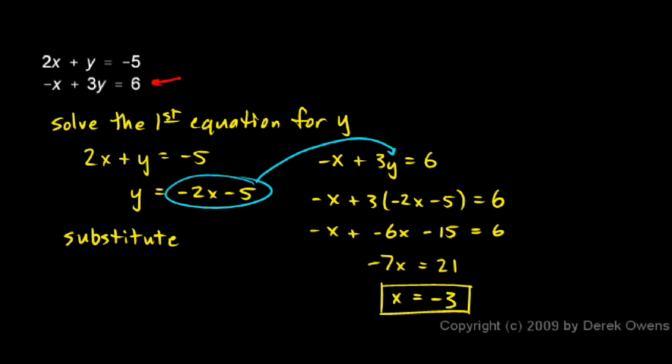And I can plug it back into this equation or to this one, or I can just look right here. Look at this line that I've written: y = -2x - 5. It's going to be very easy to plug the value for x in right there. I'm just going to take the number -3 and put it in right there.